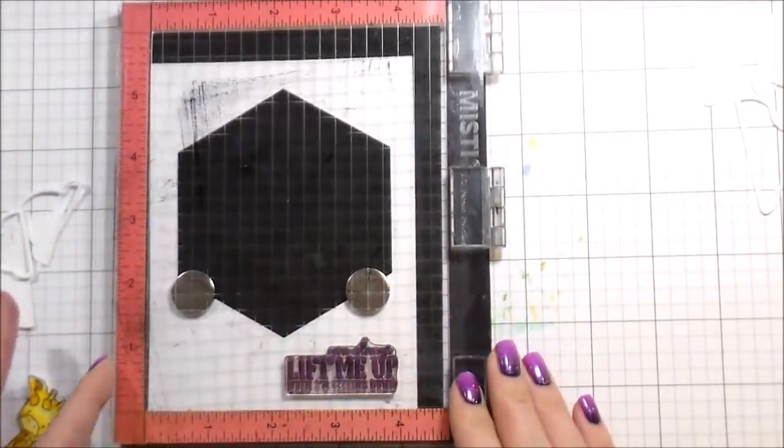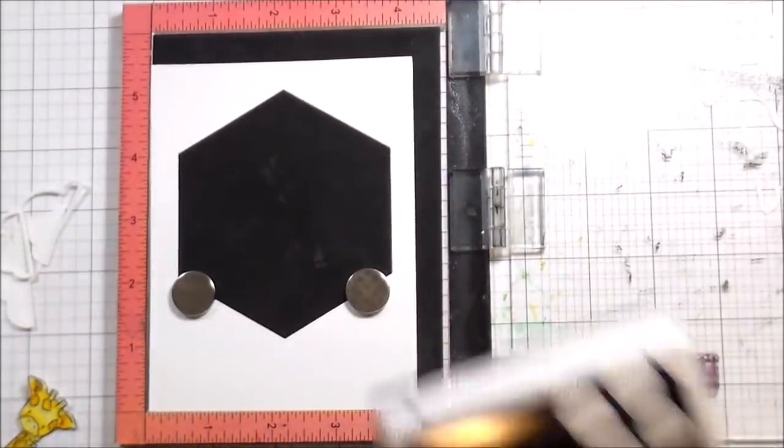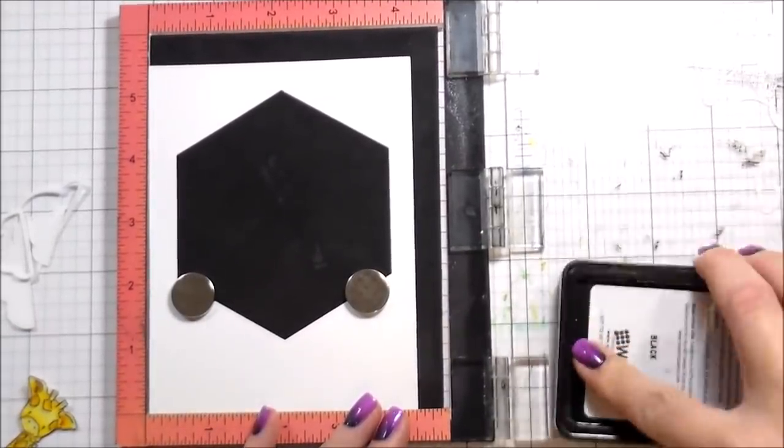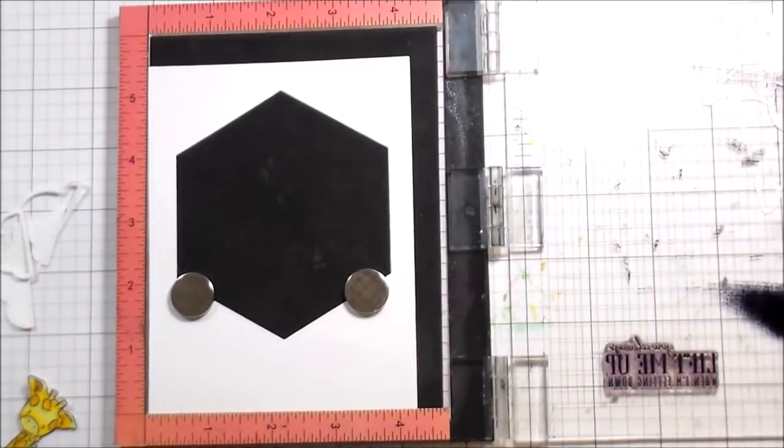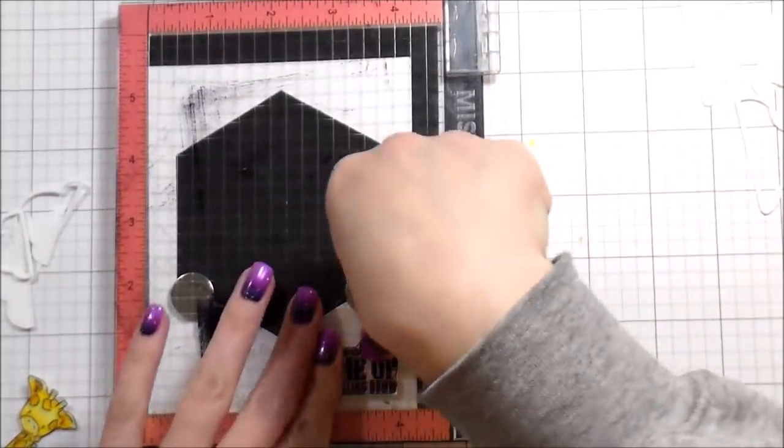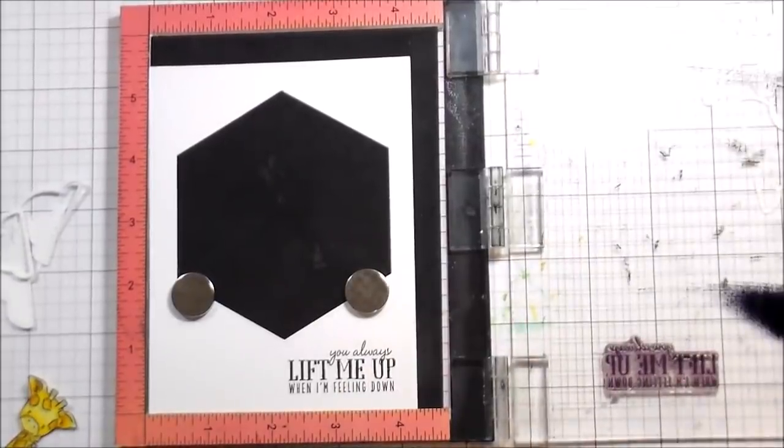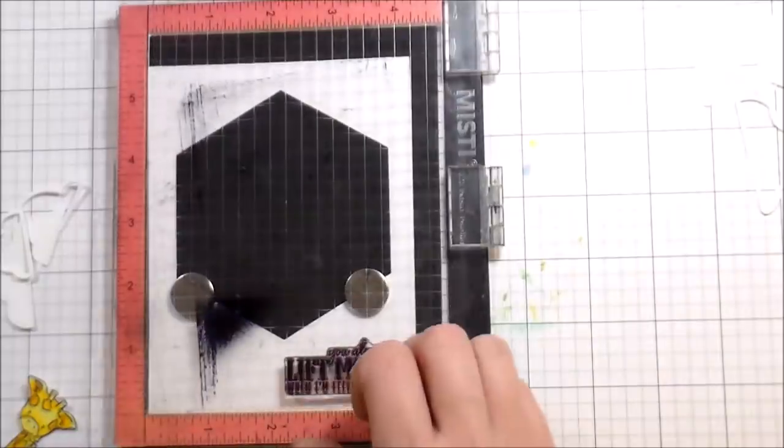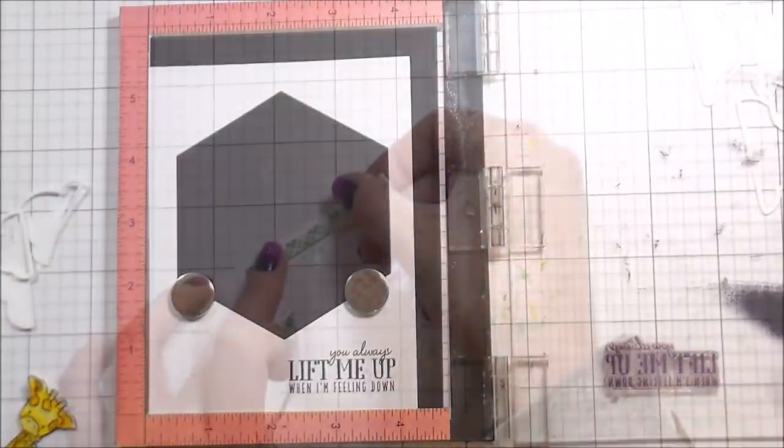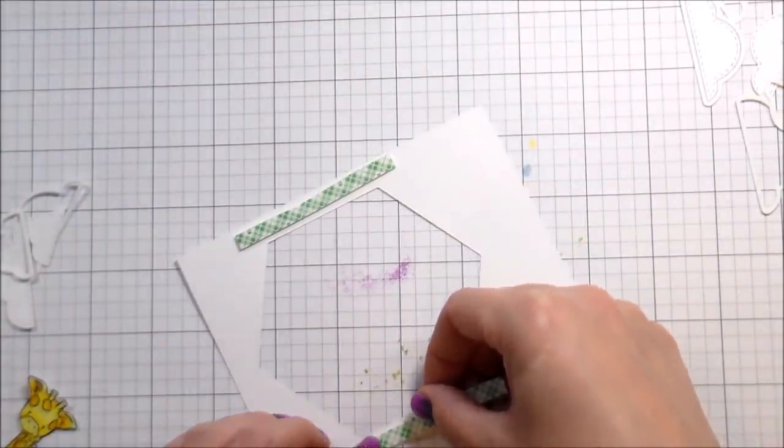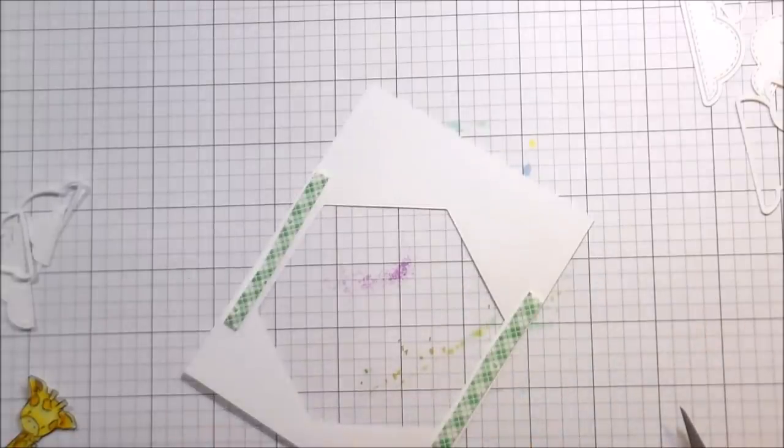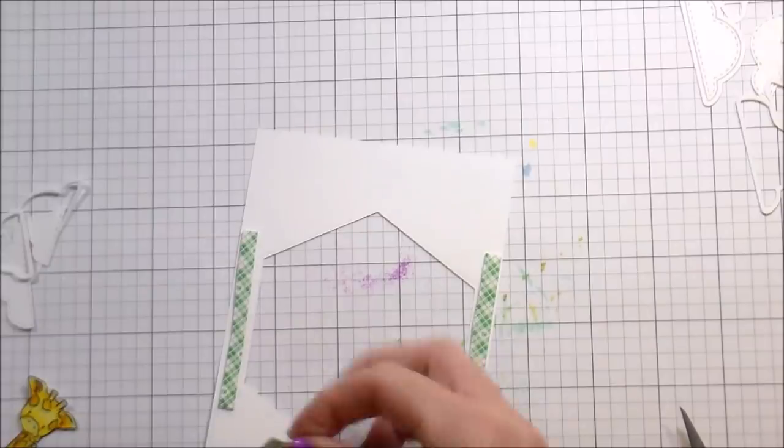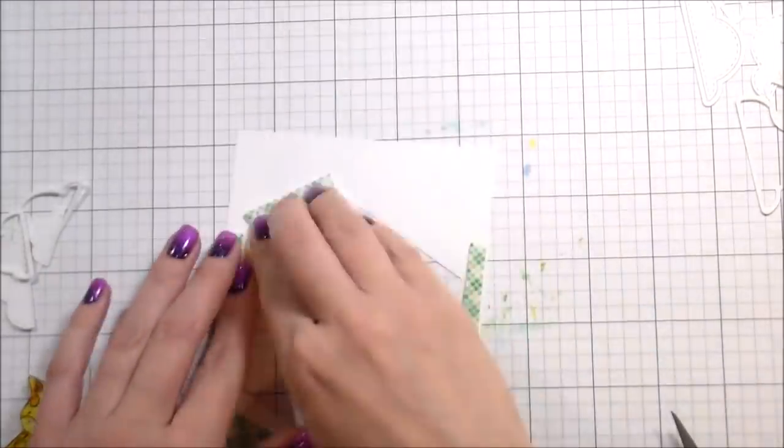I'm stamping this sentiment and I'm using the W Plus Nine black dye ink to do that. You hear me oftentimes talk about grounding my images, and usually I do that with a shadow or some sort of shading. Here I'm actually going to do it with the sentiment, so it's going to give that giraffe somewhere to sit so he doesn't look like he's just floating, and then no shading required.